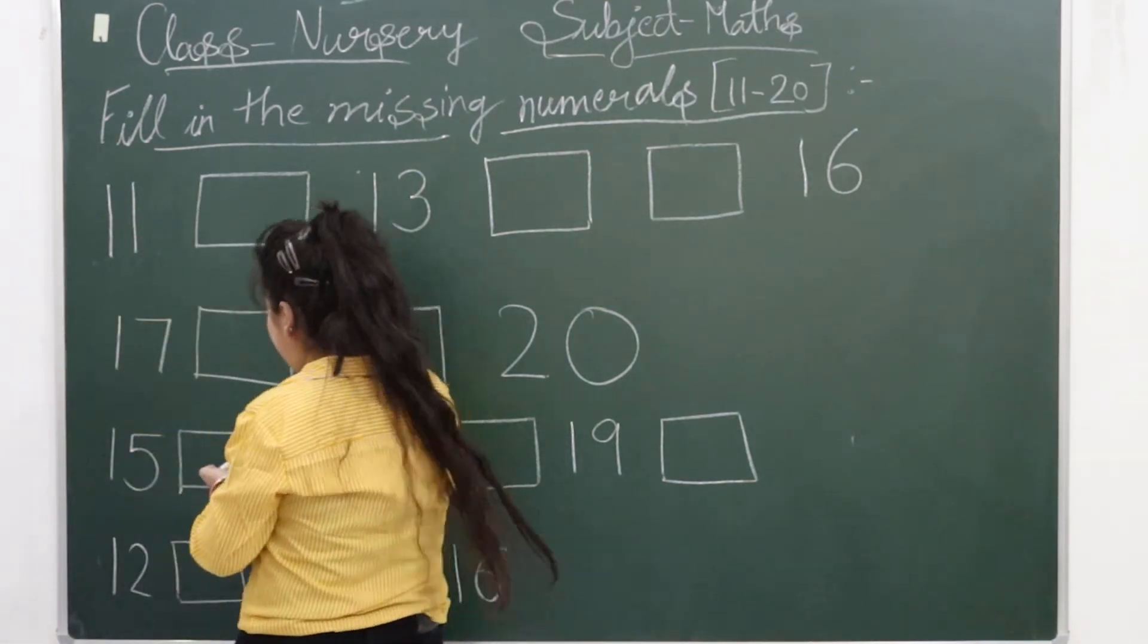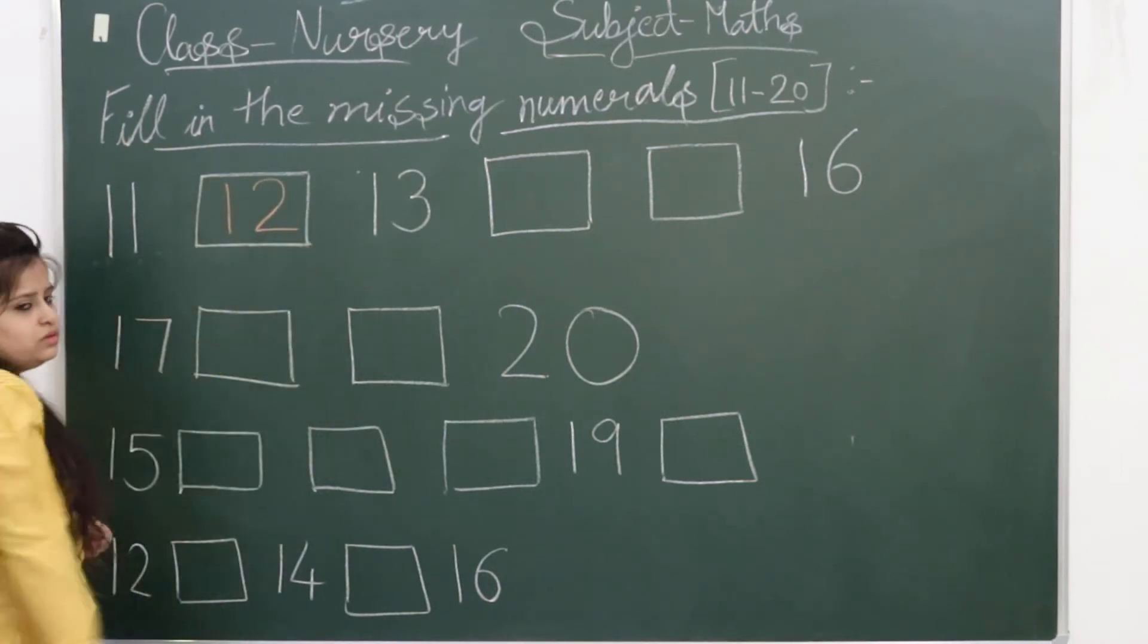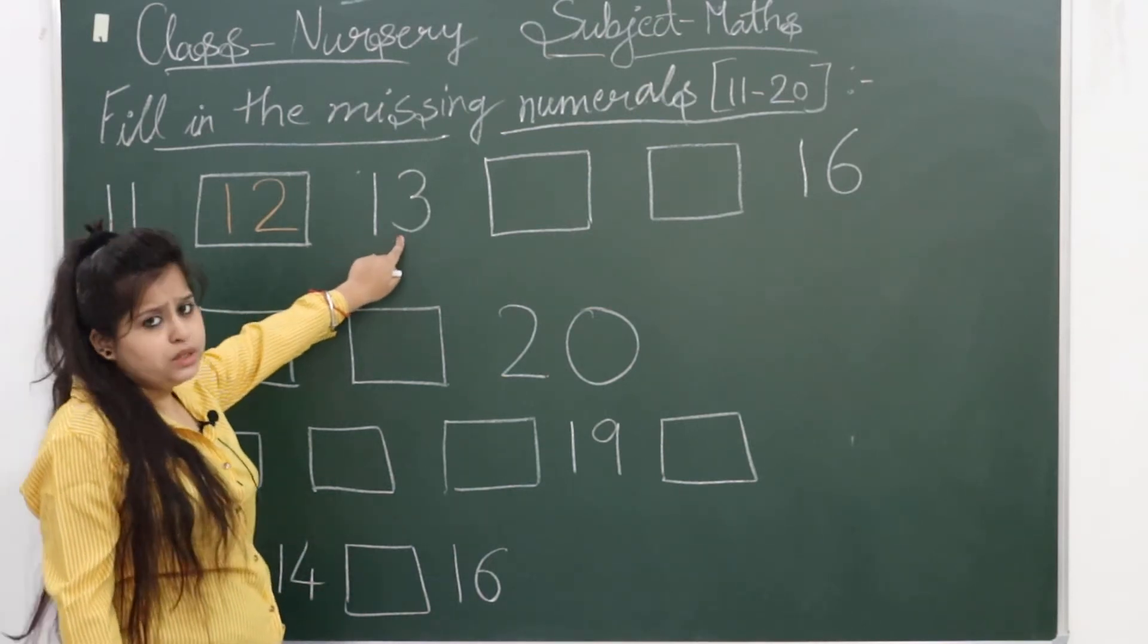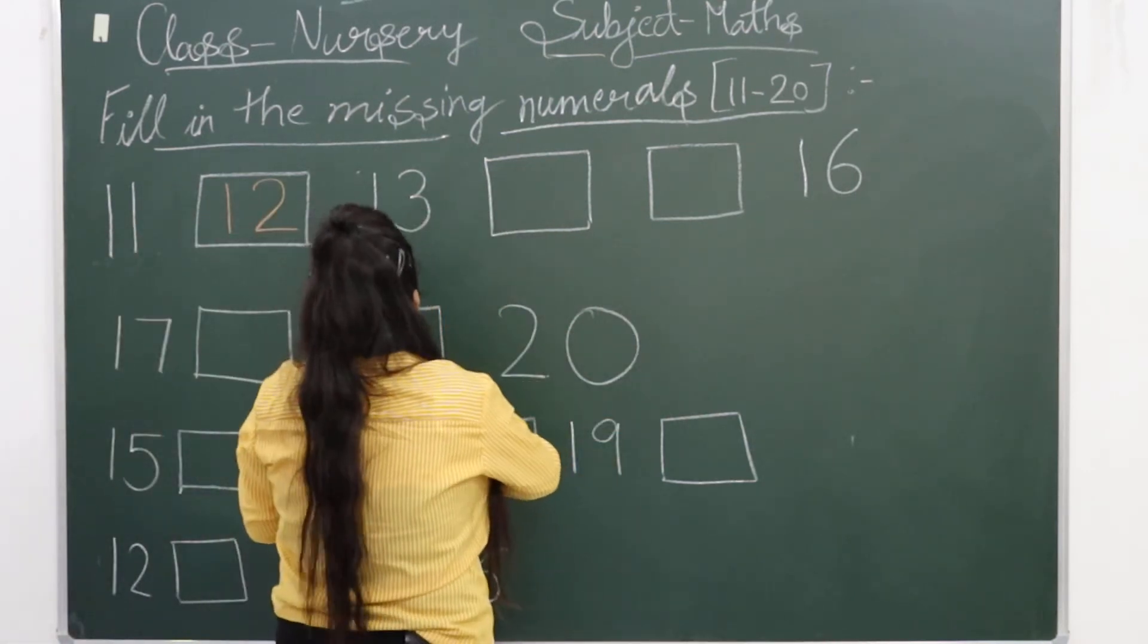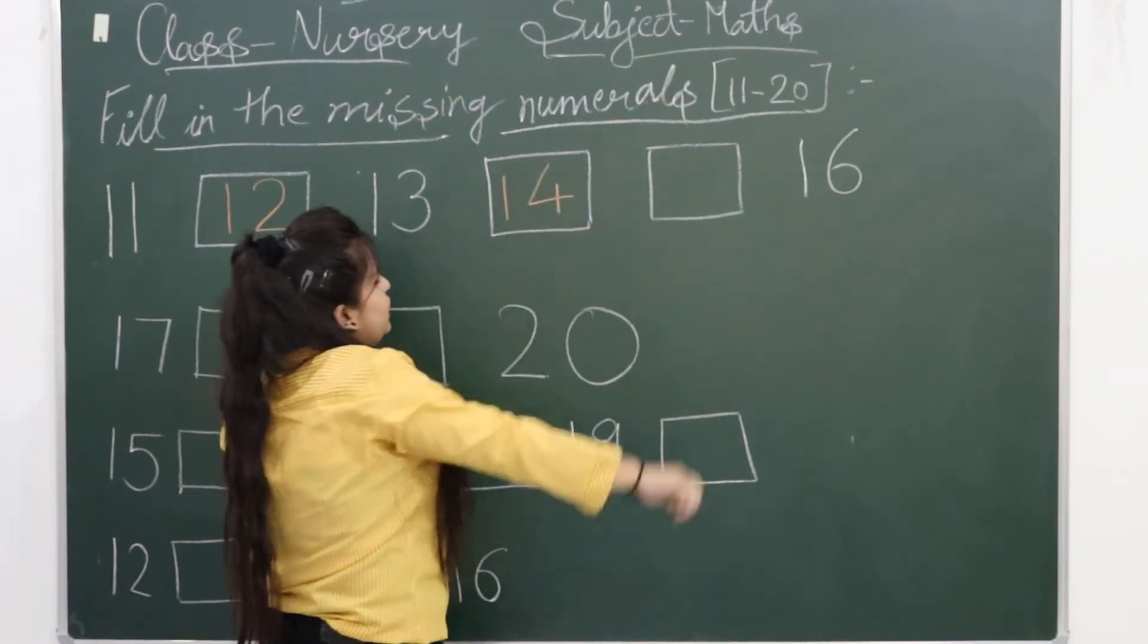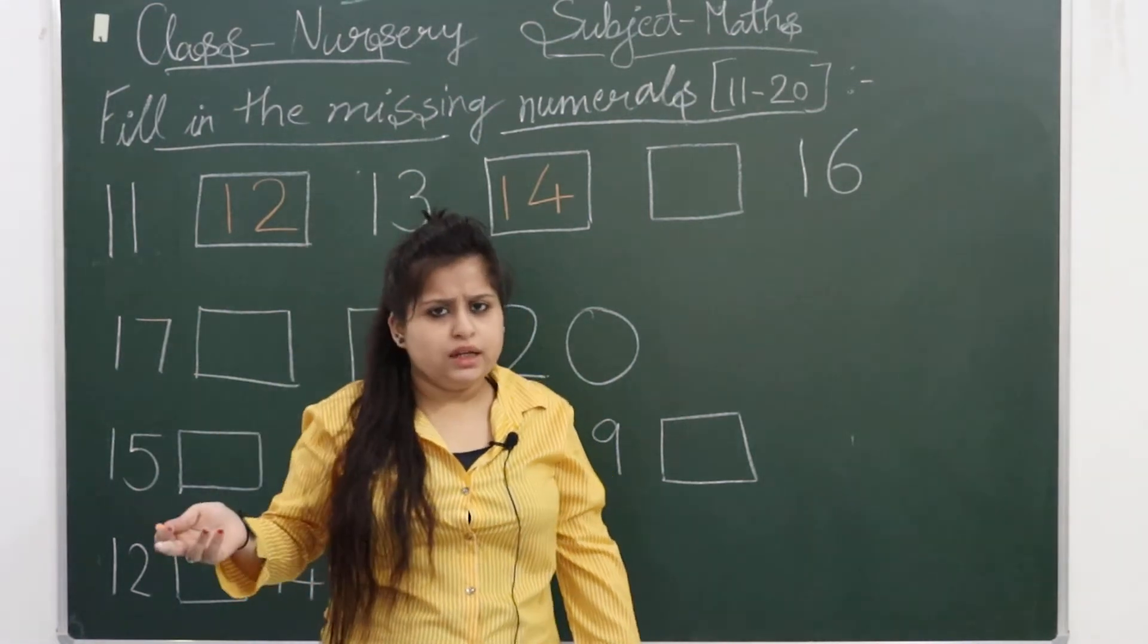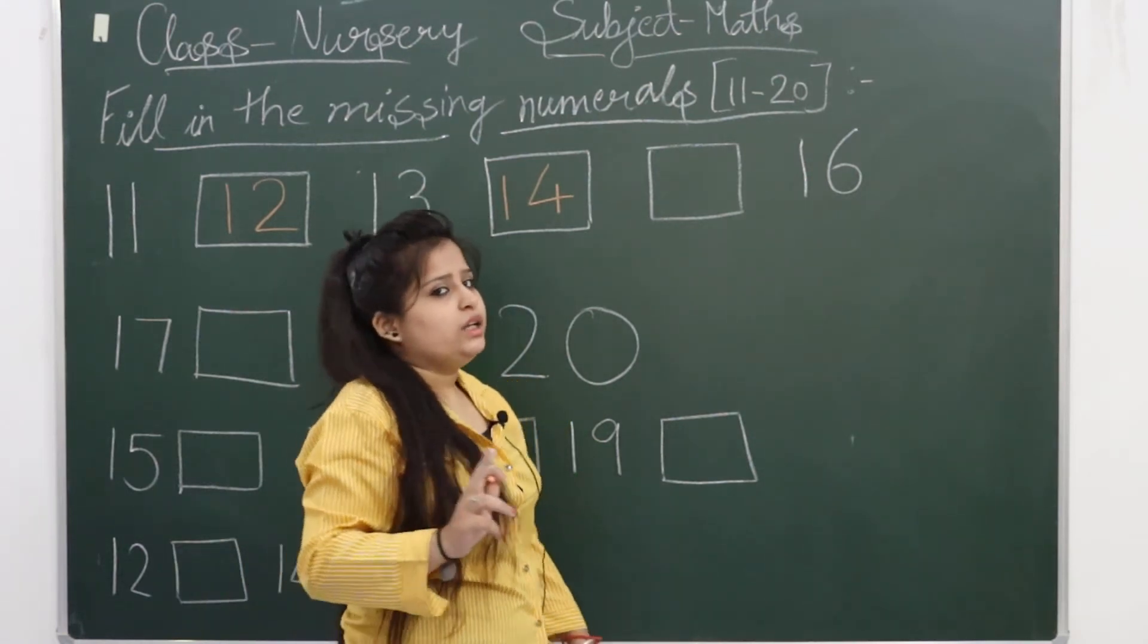1-2 twelve. So you have to write here 1-2 twelve. Clear? So after 1-2 twelve comes 1-3 thirteen, and then comes 1-4 fourteen. So we are writing here 1-4 fourteen. Now ma'am is not explaining the formations because ma'am has already explained in the previous class. The formations for 1 - you need a standing line. So you know the formations, that's why ma'am is not explaining, okay?